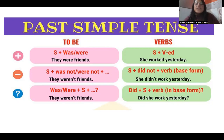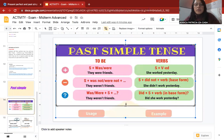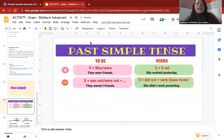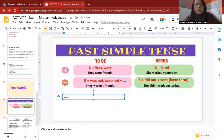'They weren't friends' — the verb 'to be' is negative using the contraction 'weren't.' To write a question, it is simple: put the verb 'to be' first, then the subject. For example: 'Were they friends?' Don't forget the question mark.